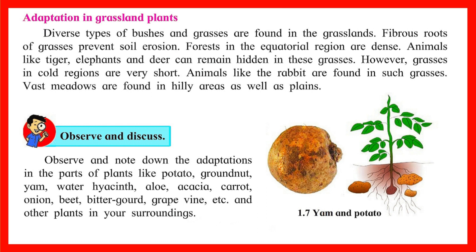Adaptation in grassland plants: diverse types of bushes and grasses are found in grasslands. Fibrous roots of grasses prevent soil erosion. Forests in equatorial regions are dense — animals like tigers, elephants, and deer can remain hidden in these grasses. However, grasses in cold regions are very short, and animals like the rabbit are found in such grasses.